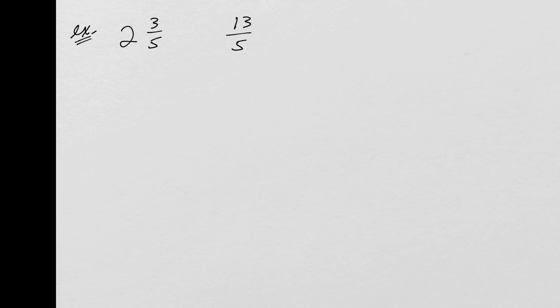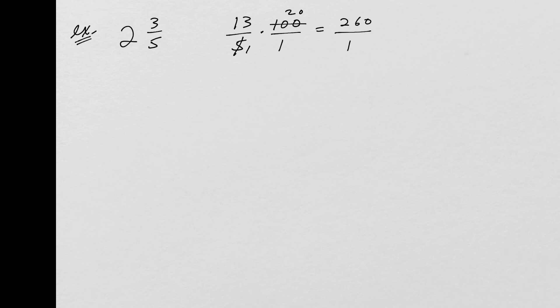What about the mixed number 2 and 3/5 as a percent? First, convert to an improper fraction: 5 times 2 is 10, plus 3 is 13, so it's 13/5. To convert a fraction to a percent, multiply by 100. Simplify: 5 goes into 5 once and into 100 twenty times. Then 13 times 20 is 260, and 1 times 1 is 1, so this is 260%. That's really all you're doing — multiplying by 100 and adding the percent sign.